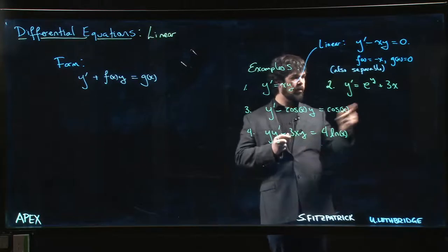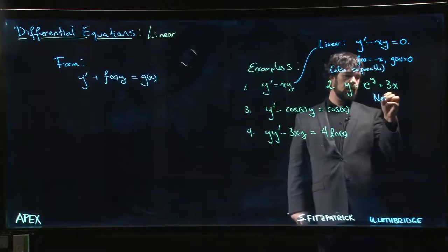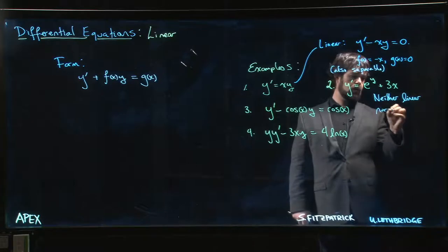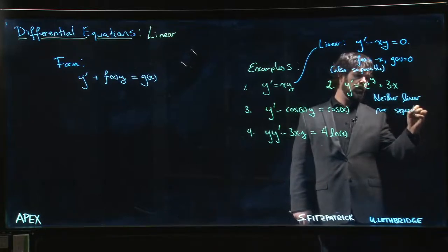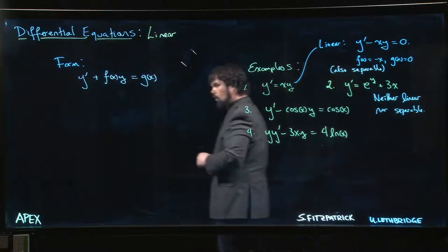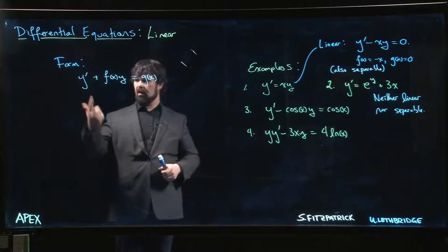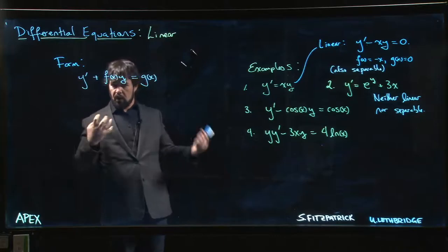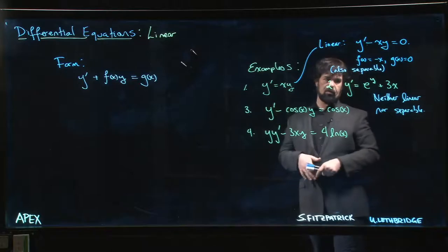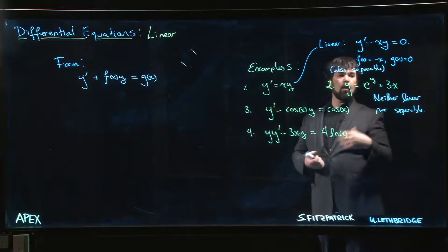If we come to something like this, this one here is going to be neither linear nor separable. Typically if you see any sort of function of y other than just y itself, you are not dealing with a linear equation. Similarly, if there was any kind of y prime squared or anything like that, if there's any kind of function of y prime, not a linear equation. That e to the y guarantees it's not linear.